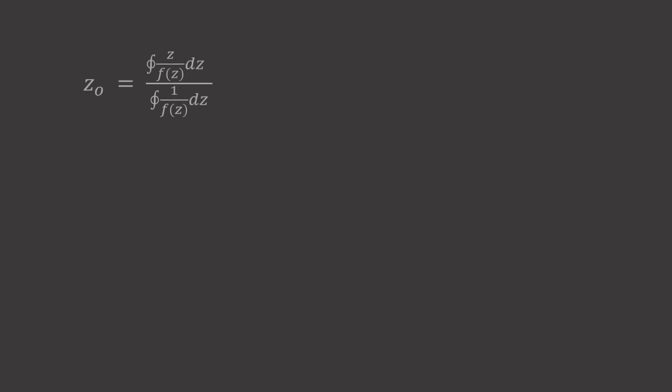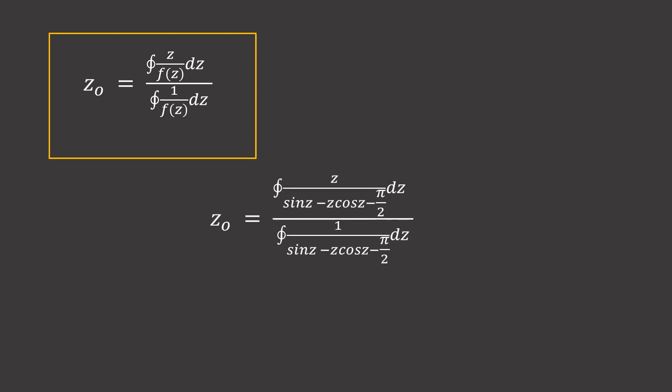We know that there is a unique solution for f(z), or a unique root within the domain of x, the real part π/2 to π, and imaginary -π/4 to π/4. The angle beta equals the integral of z over (sin z - z cos z - π/2) divided by the integral of 1 over (sin z - z cos z - π/2).